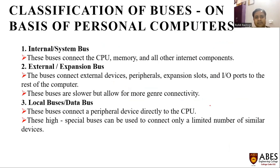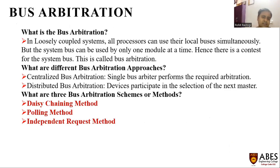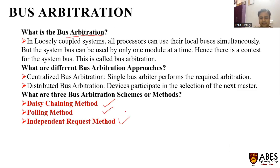Classifying buses based on personal computers, there are internal system buses, external or expansion buses, and local buses. Whenever buses are allocated to different components, all components have a desire to attain the bus for serving different tasks. To allocate the bus to different devices is called the bus arbitration method. There are three bus arbitration methods: daisy chain method, polling method, and independent request method.